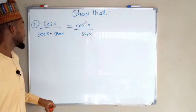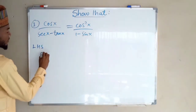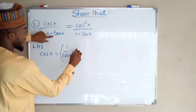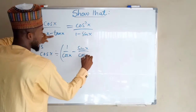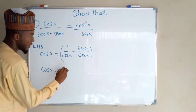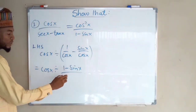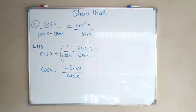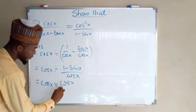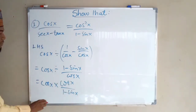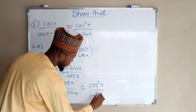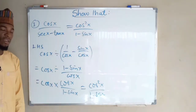Question number 3. From the left-hand side, cos x divided by secant x, where secant x equals 1 over cos x, minus tan x which equals sin x over cos x. This equals cos x divided by 1 minus sin x over cos x. We take the reciprocal to get multiplication: cos x times cos x divided by 1 minus sin x. This gives cos squared x over 1 minus sin x, which is the same as the right-hand side. Hence proved.